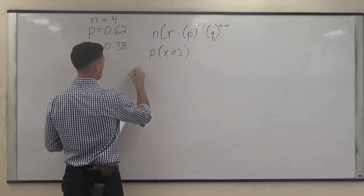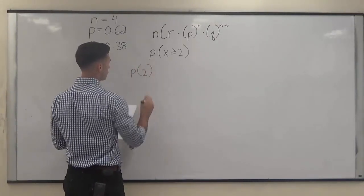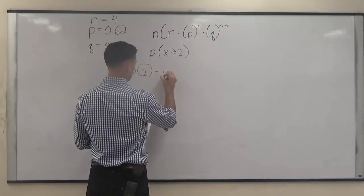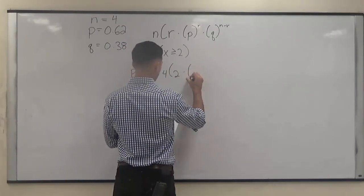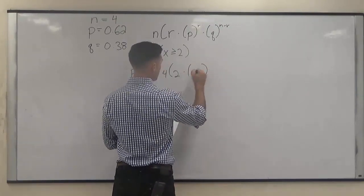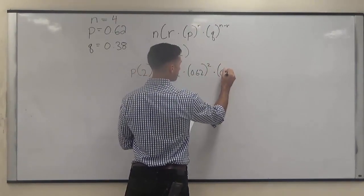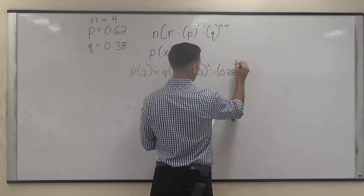So the first one, the probability of two responding this way, is going to be 4 choose 2 times 0.62 to the r times 0.38 to the n minus r.